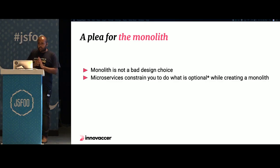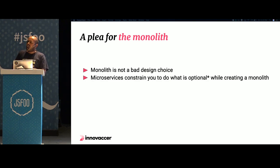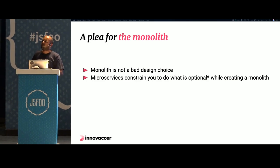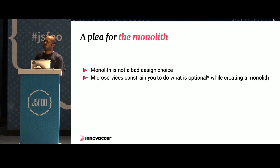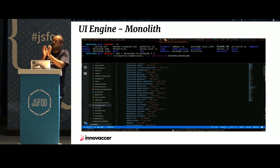A monolith is not really a bad design choice — microservices constrain us to follow best practices that were optional when building a monolith. There was a use case where we didn't have the infrastructure or scale to deploy a micro frontend architecture. In that scenario, all of our micro frontends can be installed in a single Express base and run as a monolithic application server to cater to our on-premise deployments.